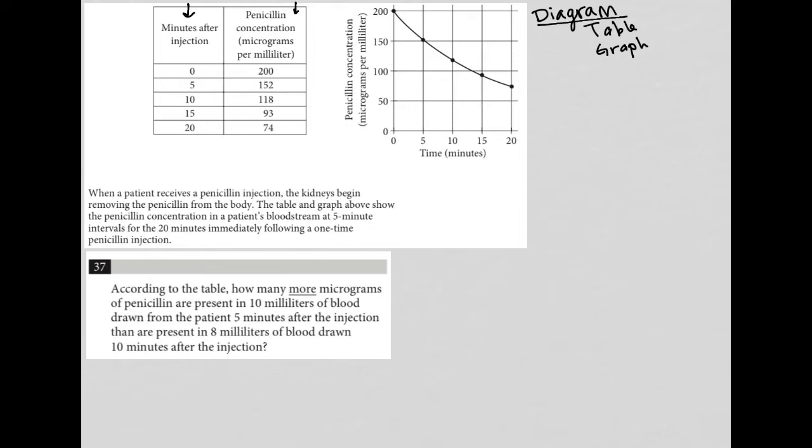And then the same for the graph here, we have time, which is also in the same denominations of time that we had in the table, in five minute increments. And then we also have for y-axis penicillin concentration in micrograms per milliliter. So basically these two forms of data representation provide the same data.